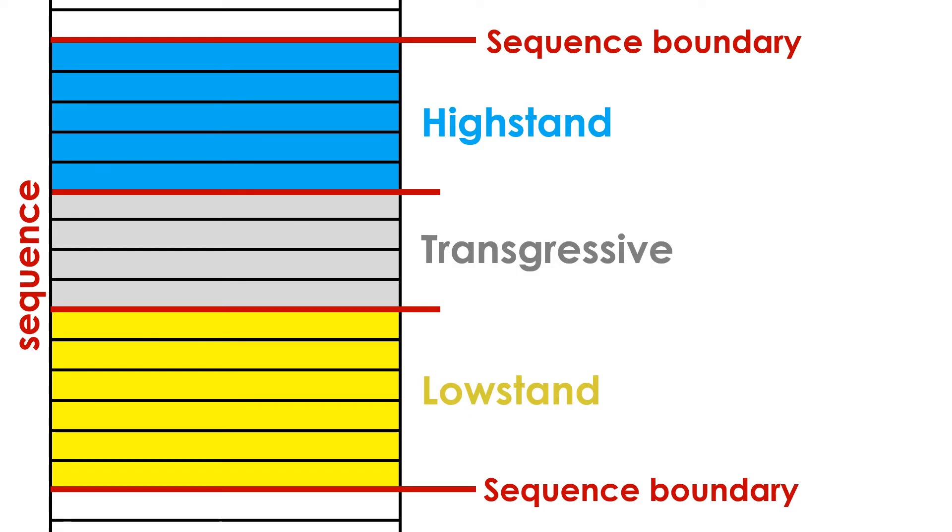Each systems tract, in turn, consists of multiple packages of strata called parasequences. Each systems tract represents a time in the cycle of sea level change, and the parasequences represent minor fluctuations in sea level during those times.